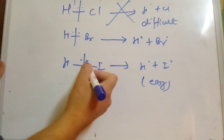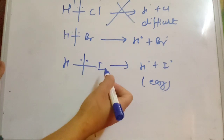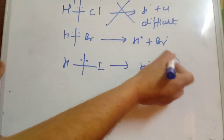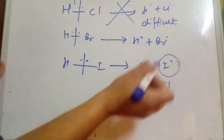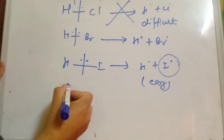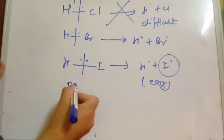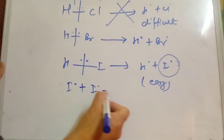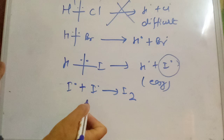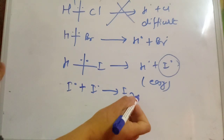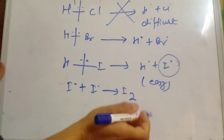But why is the peroxide effect not seen in HI? The iodine radical (I•) is very reactive and tends to combine with itself to form I₂, rather than participating in the propagation steps of the radical chain reaction.